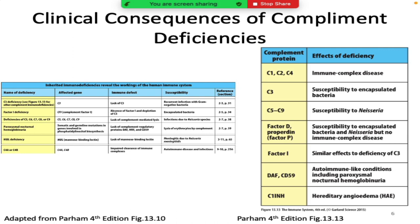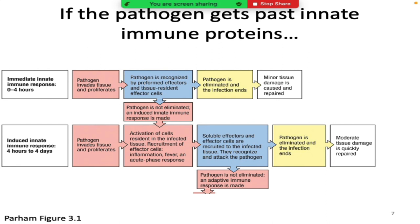A student asks whether people actually have problems from complement deficiency or whether some have no deficiency at all. Many people have no deficiency — most people have the standard complete complement cascade. But there are some patients whose disease is defined by being missing a particular complement protein.